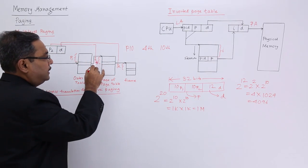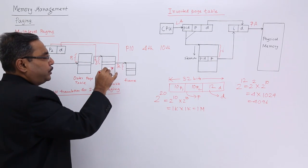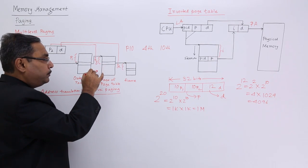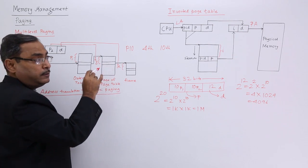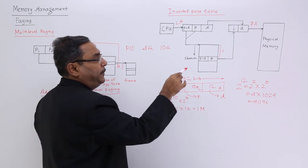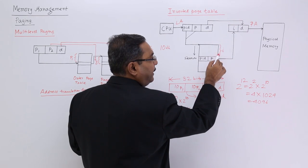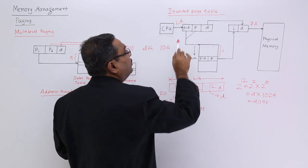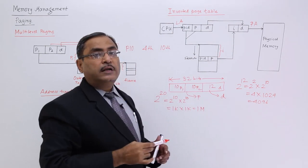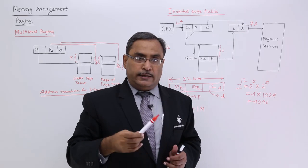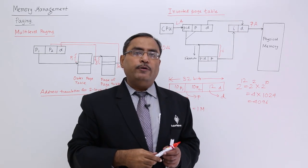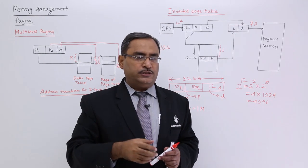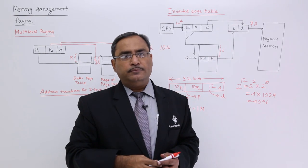To recap: in an ordinary page map table, page numbers are the location numbers and the content is the frame number. In the inverted page table, the page number is the content and the frame number is the location number — that is why it is called an inverted page table. In the next videos, we will cover other topics on memory management. Thank you for watching.